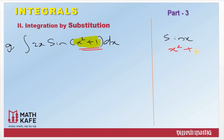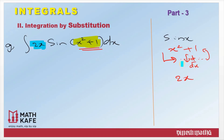Now we consider x² + 1 as the substitution. How do you confirm this is the right choice? Check the derivative of that expression — it is 2x — and cross check whether you have a 2x in the question. Clearly you can see 2x is also present in the question. That says your thought process is perfectly right and you must use x² + 1 as the substitution, as its derivative is present in the question.